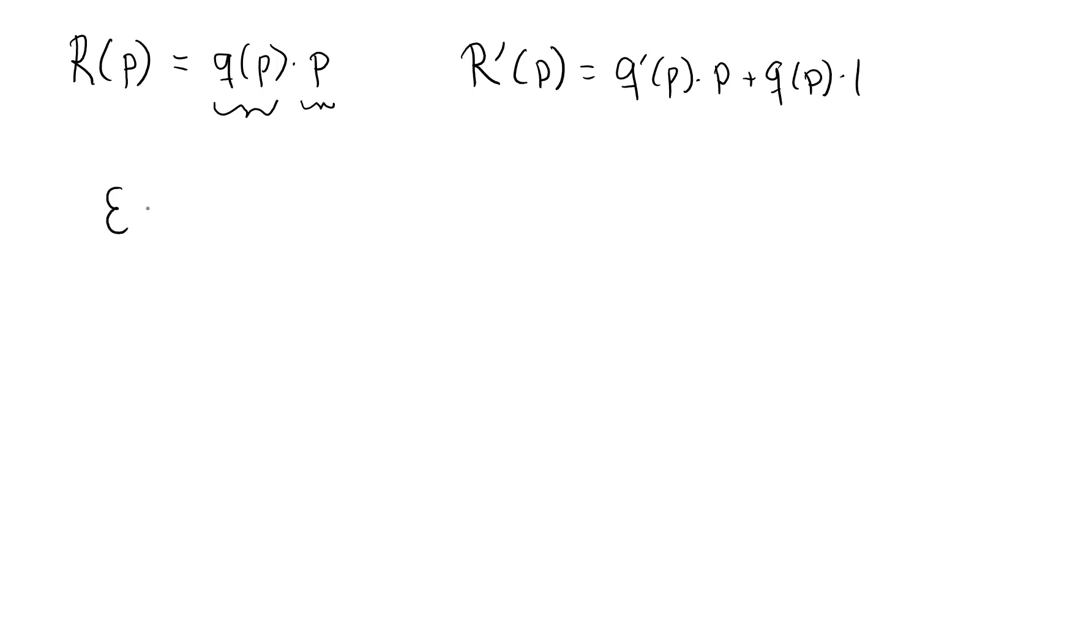Remember that epsilon, the price elasticity of demand, was Q prime of P times P over Q of P. This is almost what we have here in my first term. So what I can do is write this as Q prime of P times P over Q of P, multiplied by Q of P.